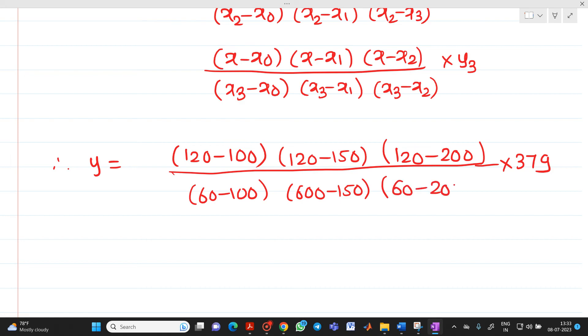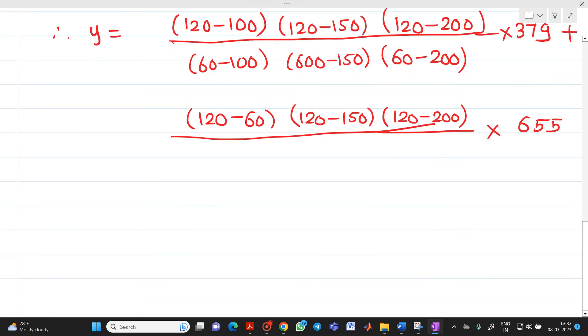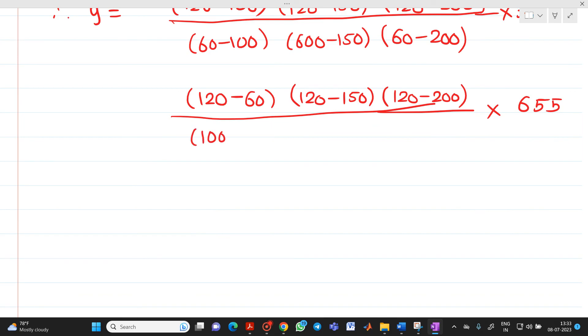Plus, 120 minus 60 into 120 minus 150 into 120 minus 200, here it will be 655 divided by 100 minus 60, 100 minus 150, 100 minus 200.